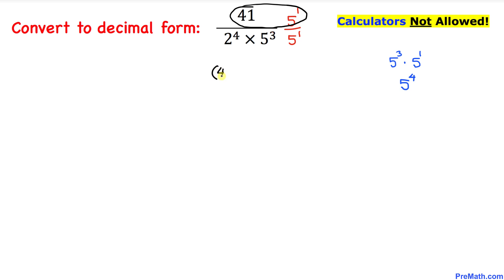Let's write down 41 times 5 and divide it by 2 power 4, and then times 5 power 3 times 5 power 1. Here, if you can see, 5 power 3 times 5 power 1 is the same as 5 power 4.